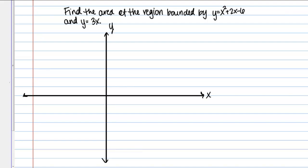In my sketch, I don't care a lot about specific details. What I'm mainly concerned about is which function is on top and where they intersect. This is just going to be a rough sketch. Let's start by sketching Y equals 3X. That's a little bit easier to deal with. That's just a line, a slanted line that goes through the origin with a slope of 3.